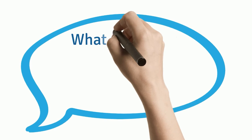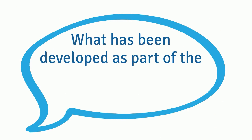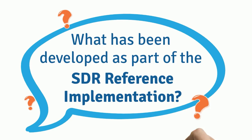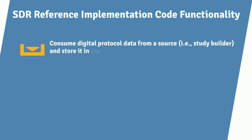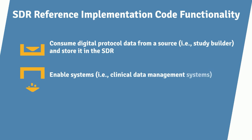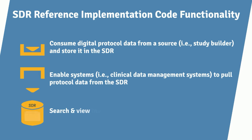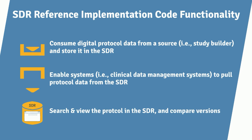What has been developed as part of the SDR reference implementation? The SDRRI code functionality includes being able to consume digital protocol data from a source such as a Study Builder, allow systems such as a clinical data management system to pull protocol data from the SDR, and allow users to search and view the protocol data in the SDR and compare versions of the same study.